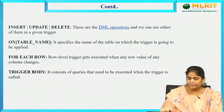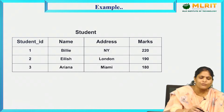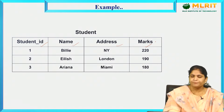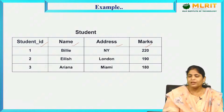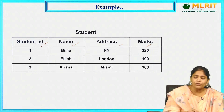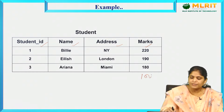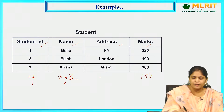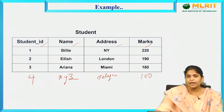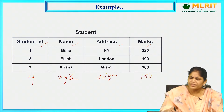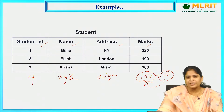Let us discuss with a simple example. We take a student table which consists of student ID, name, address, and marks. I want to create a trigger before insertion. Whenever I insert a row — for example, student with ID 4, name X, address Telangana, and marks 100 — the trigger's purpose is to automatically add 100 marks to whatever marks are given at insertion.